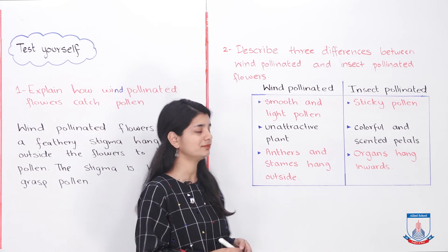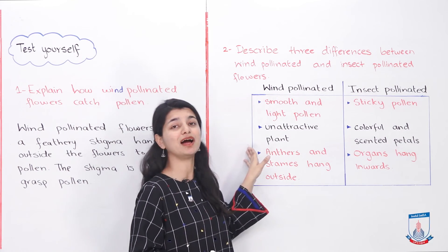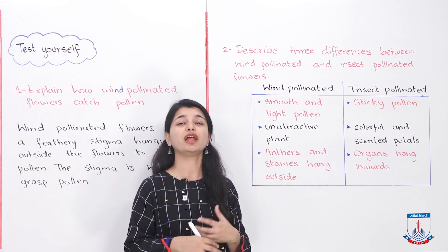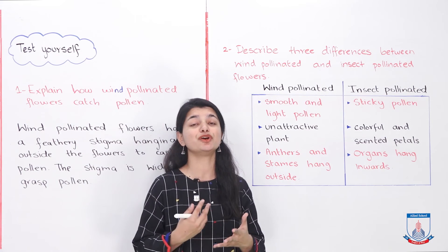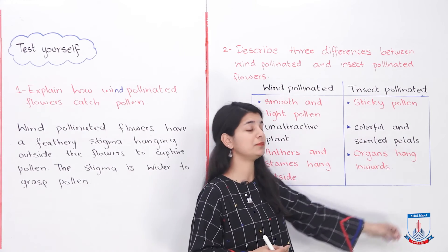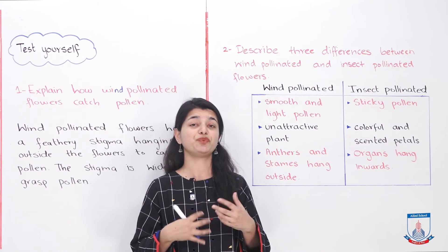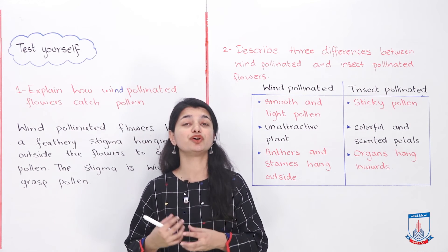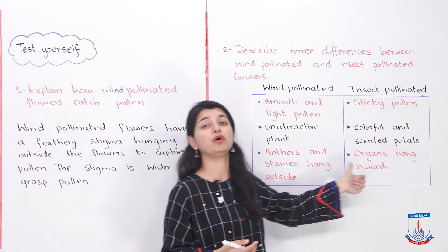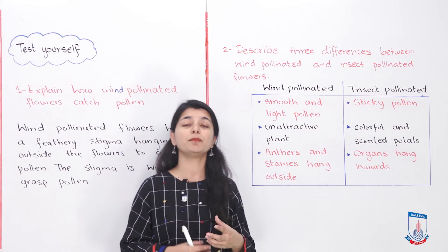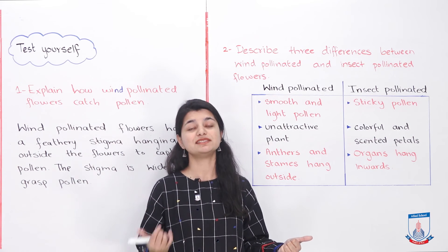The second difference: wind pollinated plants are unattractive, while insect pollinated plants have colorful and scented petals. Wind pollinated plants are not so attractive or beautiful — they have small leaves and small pollens, and they do not need to attract insects. Insect pollinated plants, on the other hand, have colorful petals, scented petals, nice flowers — they are colorful and radiant so they can attract insects.